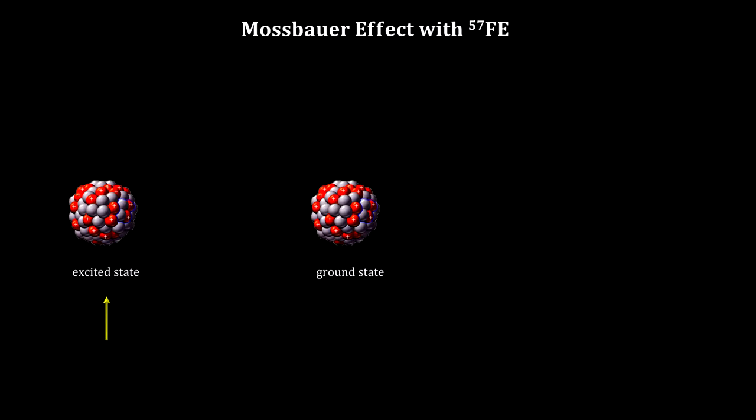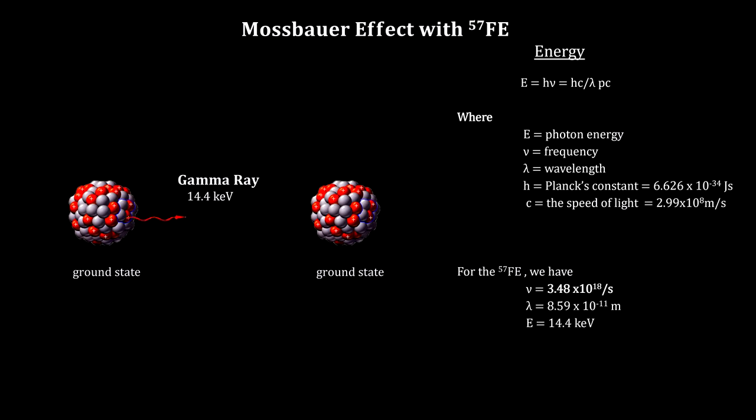Here we have an iron atom's nucleus in an excited state. When it falls to a lower energy level, a gamma ray photon carrying the energy is emitted. Once this photon enters a like atom, it will be absorbed, raising the energy level of the encountered atom's nucleus.